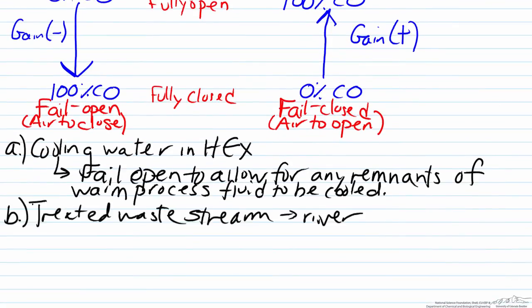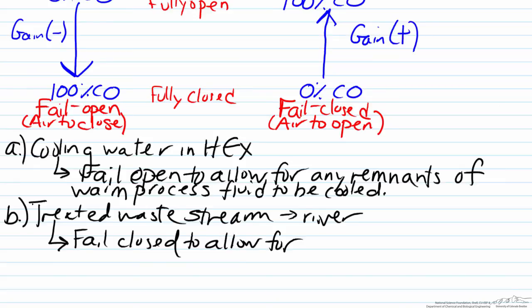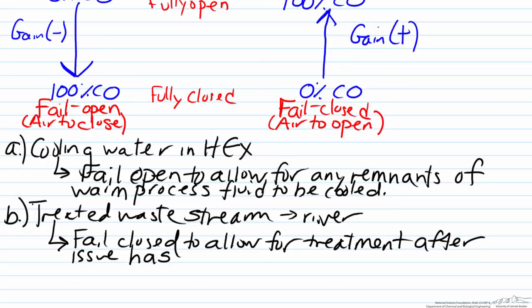Part B: the concern here is that if the process underwent a power outage, fluid would no longer be treated as desired. This could result in releasing fluid that is off specification and potentially quite toxic to the environment. Therefore we would want this valve to fail closed, to allow for treatment once whatever issue caused the power outage has been remediated.